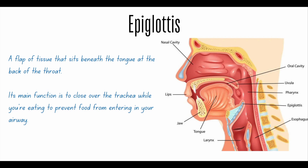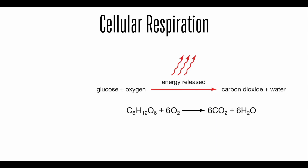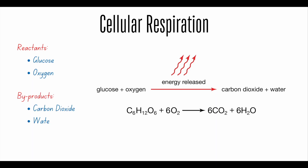Now let's talk about cellular respiration. For the TEAS exam, you must know the equation for cellular respiration — specifically the reactants and the byproducts. The reactants, found on the left side of the equation, are glucose and oxygen. The byproducts of cellular respiration are carbon dioxide, water, and ATP.